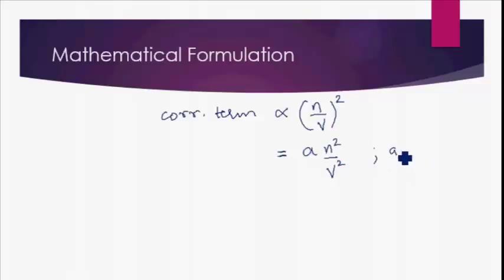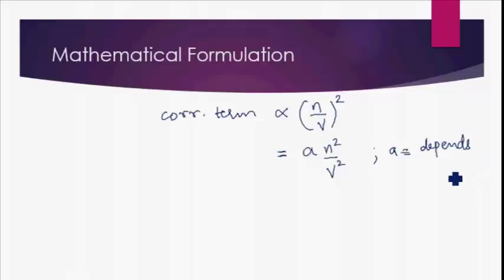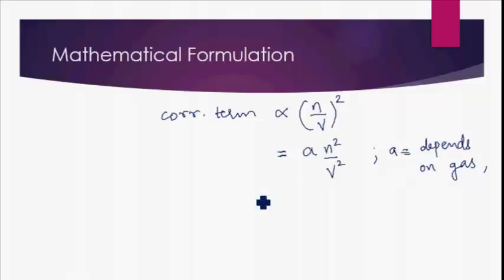This constant of proportionality 'a' is a characteristic of a given gas — it depends on the type of real gas, whether it is nitrogen, chlorine, or argon, so it has a different value for different gases. But for a given gas it will have the same value everywhere. It also depends on the magnitude of the attractive force — what kind of intermolecular forces are present in the gas. So this makes the ideal gas pressure equal to the pressure of real gas plus an²/v².